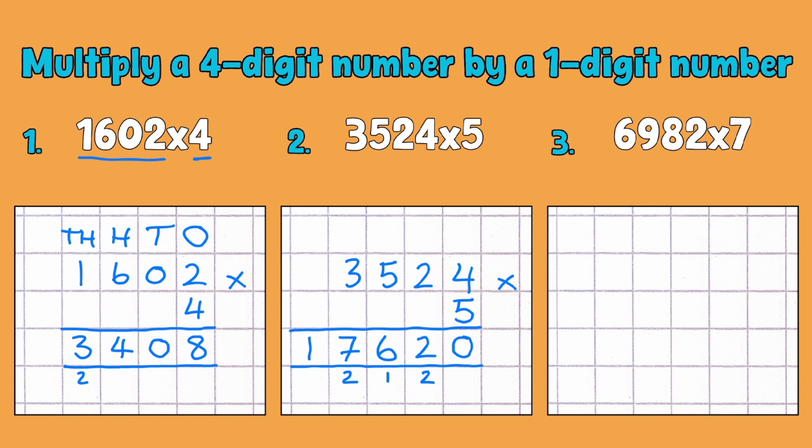Let's get going with this example then. 6,982 multiplied by 7. We'll get our equal sign in there, our nice answer sign.